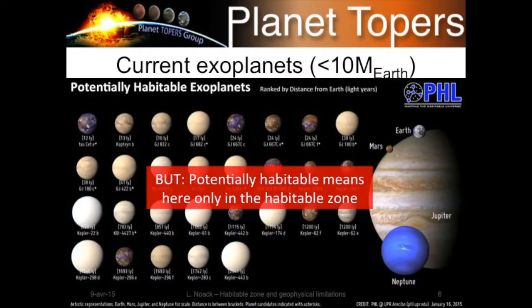This is a regularly updated diagram from PHL showing potentially habitable planets discovered so far. As of January this year, we have a lot of potentially habitable planets. 'Potentially habitable' here means only that these planets are in the habitable zone, calculated for a planet that can outgas as much water or CO2 as you want it to have.